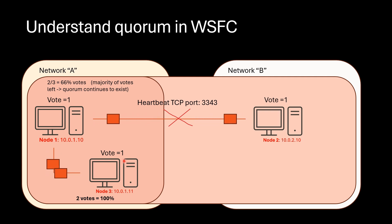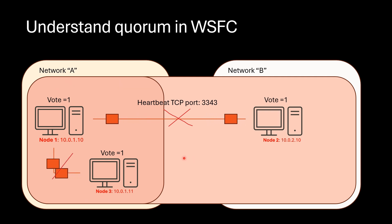Reconnection attempts with node 2 will continue until reconnection succeeds. If the connection is reestablished, node 2 will again be added to the cluster. Now suppose heartbeat is lost even with node 3. In this case, primary is left alone with only one vote.